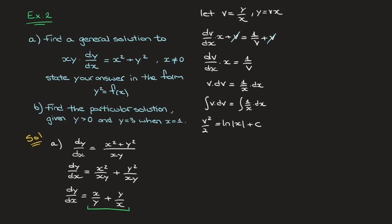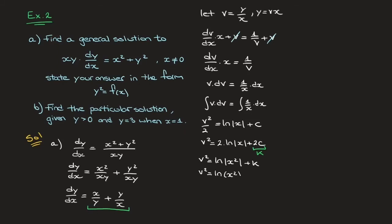Multiplying both sides by 2 leads to v squared equals 2 ln of the absolute value of x plus 2c. To avoid working with two times a constant, I'll define 2c as a new constant k. Using the fact that I can write 2 as an exponent on the x inside the logarithm, this becomes v squared equals ln of the absolute value of x squared plus k. Since x squared is always positive, we can get rid of the absolute value: v squared equals ln of x squared plus k.